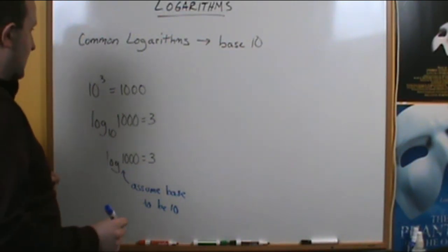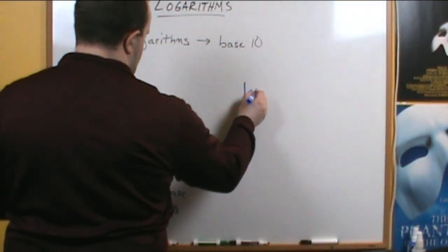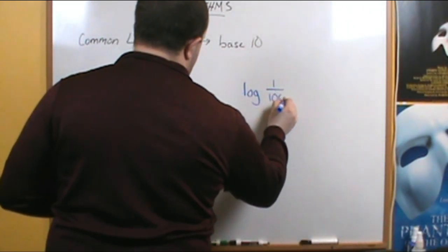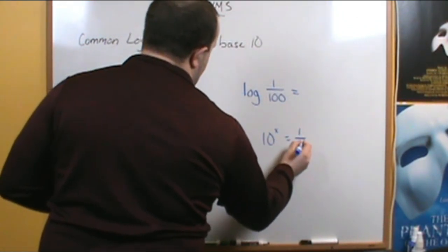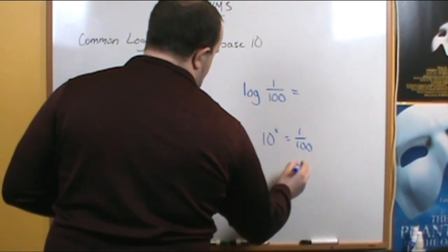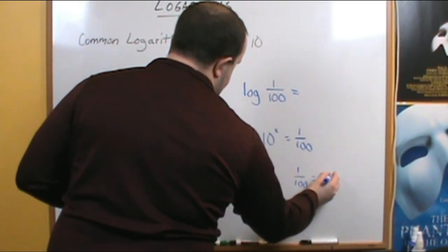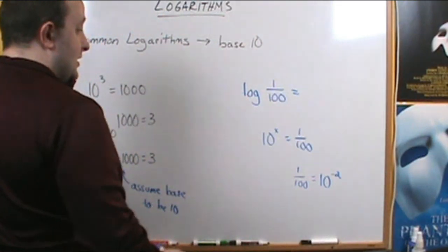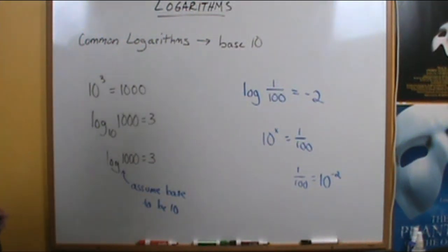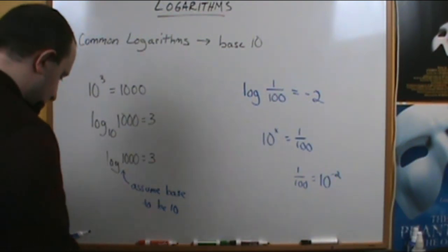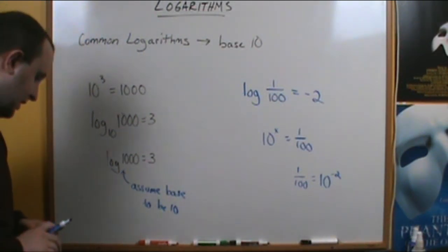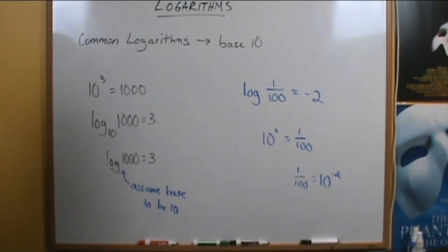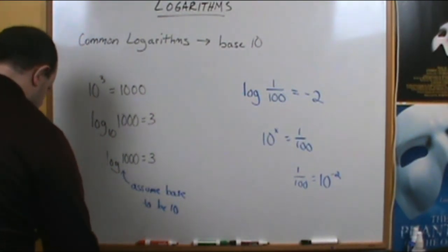If we were to evaluate a common logarithm — say the common log of 1 over 100 — we have to think: 10 to what power equals 1 over 100? Well, 1 over 100 is also 10 to the negative 2. So 10 to the negative second power is 1 over 100, meaning log of 1 over 100 is negative 2. Those same four properties of logarithms also hold true for common logarithms.